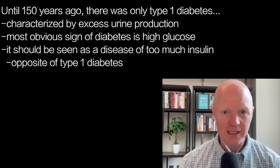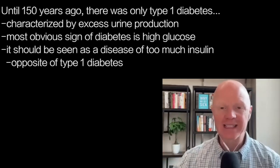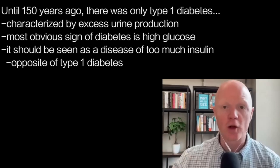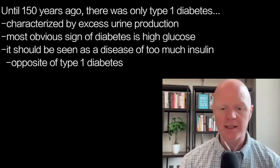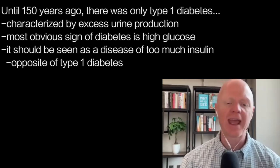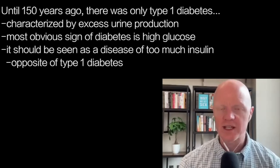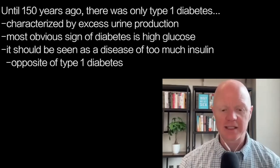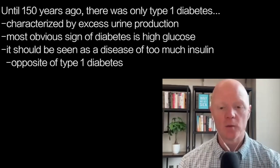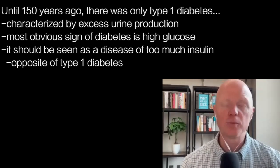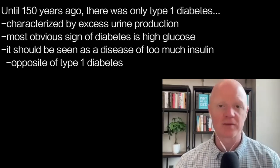The term diabetes comes from the Greek word for the excessive production of urine, or to flow through too quickly. The most obvious sign of diabetes classically was a result of the high glucose, and unfortunately that view has persisted where we still look at type 2 diabetes as a disease of too much glucose — when if we had a more precise paradigm, we would view it as a disorder of too much insulin. In that sense, it becomes the exact opposite of type 1 diabetes.